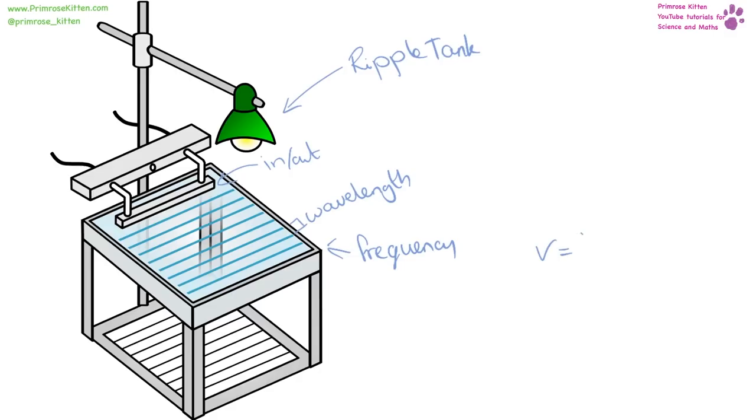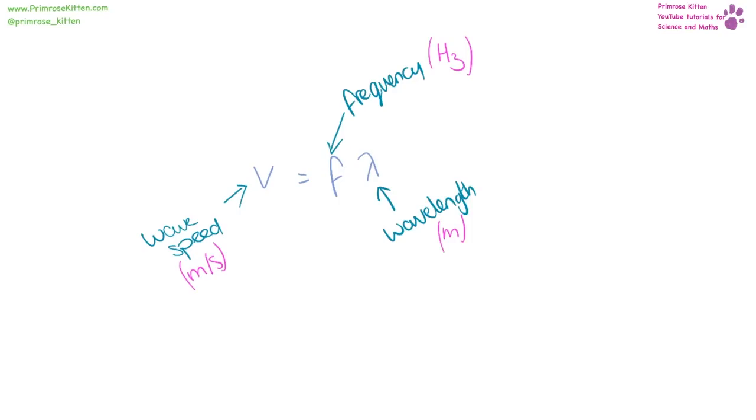V equals F times lambda. To work out the speed of a wave, wave speed, we can take the frequency and times it by the wavelength. Our units of speed are in meters per second. Frequency is in hertz, capital H, lower case Z, and wavelength is in meters.